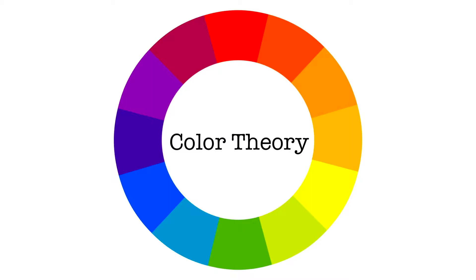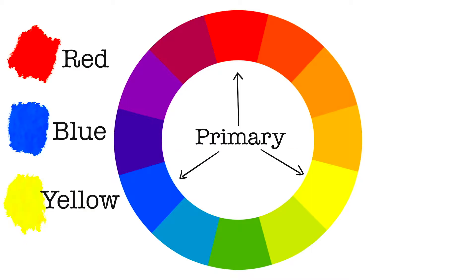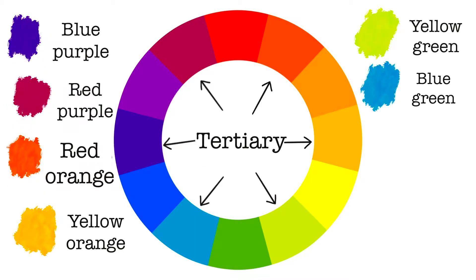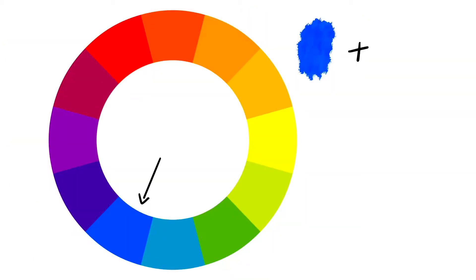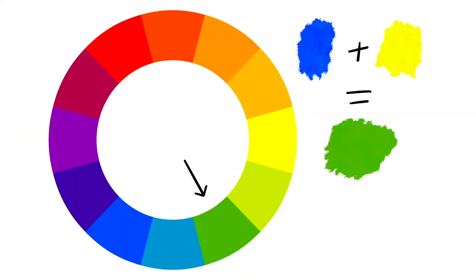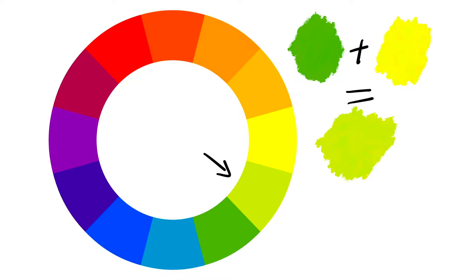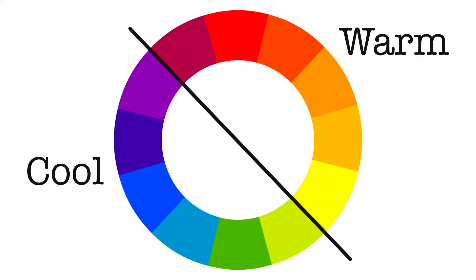Let's go over the terms first. You have your primary colors, secondary colors, and tertiary colors, also referred to as hues. By mixing your primary colors you get all the colors in the color wheel. A secondary color is two primary colors mixed together, and a tertiary color is one secondary and one primary color mixed together. These are also split into warm and cool colors.